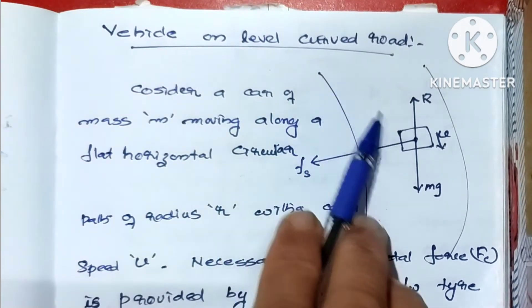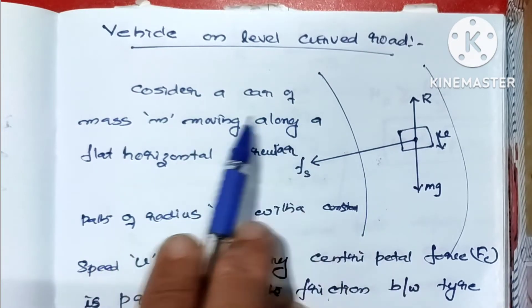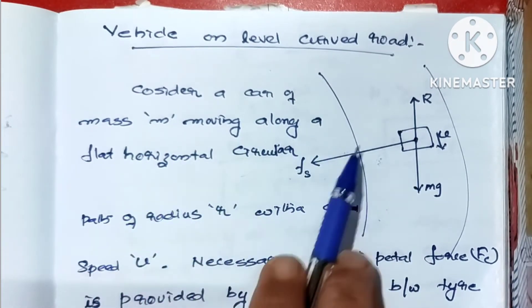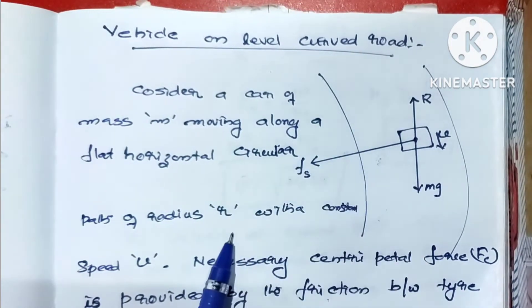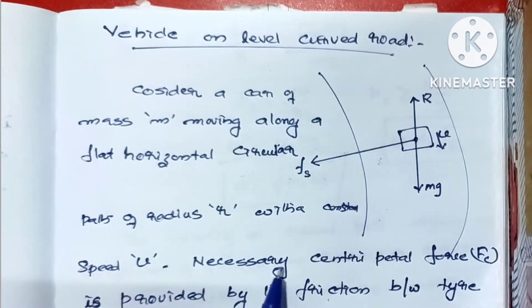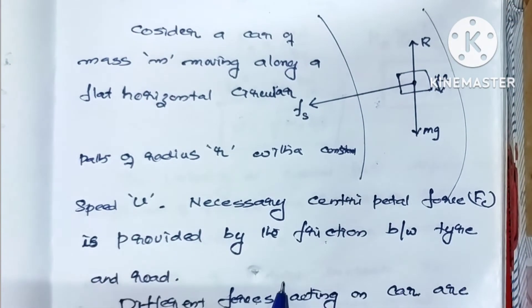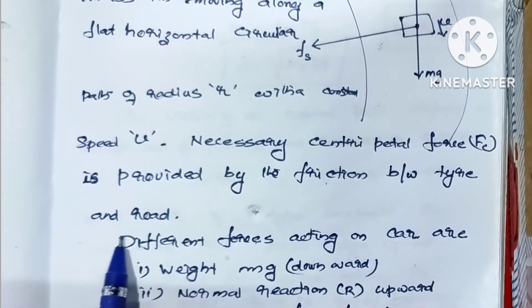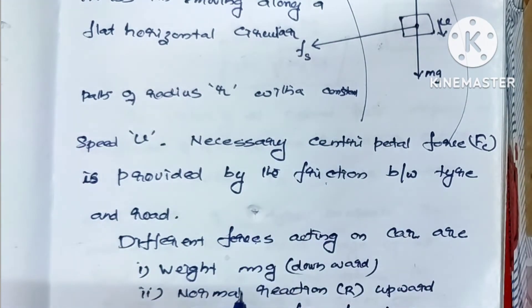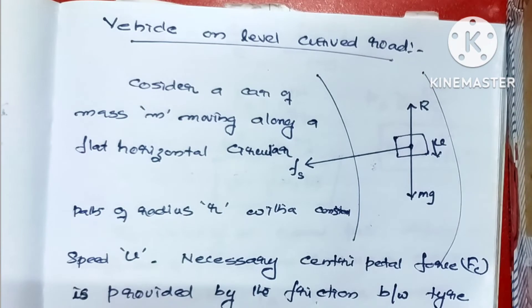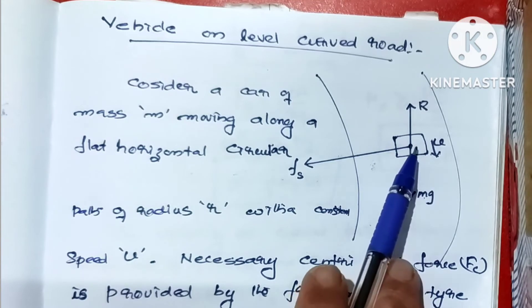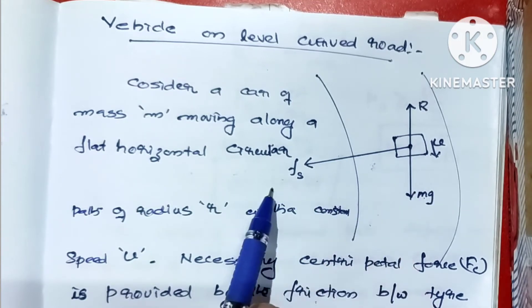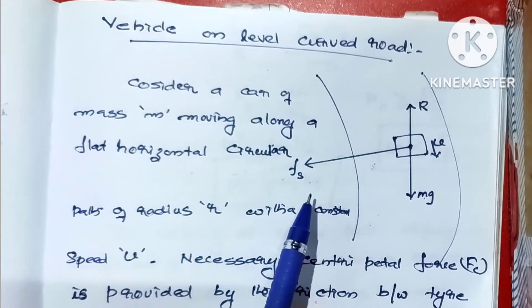This is a curved road with a car of mass moving along a flat horizontal road. The road is level. The car moves along a curved radius with constant speed. The necessary centripetal force is provided by the friction between the tyre and the road. That friction is the centripetal force. There is a force mg and the normal reaction becomes the opposite.